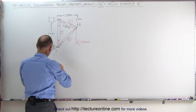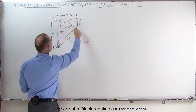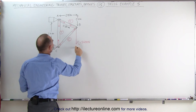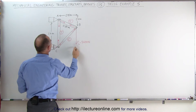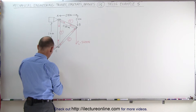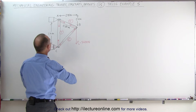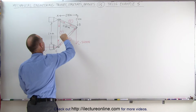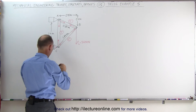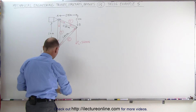We'll do the same for this member here. The distance from there to there is 1 meter, and the distance here is 0.75. So 0.75 squared plus 1 squared — take the square root — gives us 1.25 meters for this member.